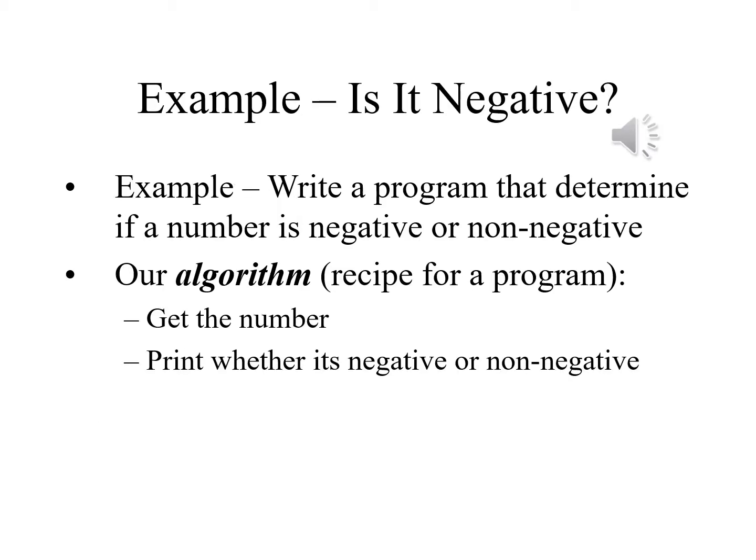Let's take a look at an example. 'IsItNegative' is the name of the program. It will determine if a number we enter is negative or non-negative — non-negative meaning positive or zero. Our algorithm, the step-by-step process the computer will follow, will involve getting the number and then printing whether it's negative or non-negative.